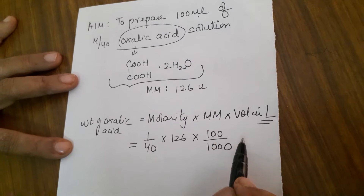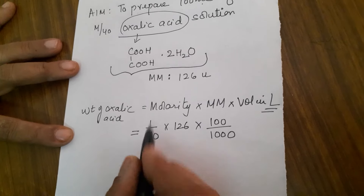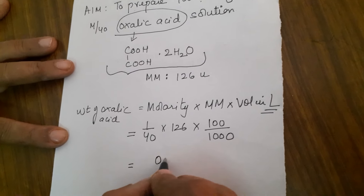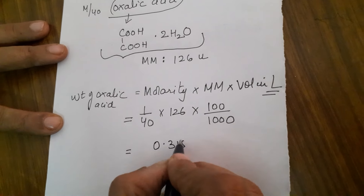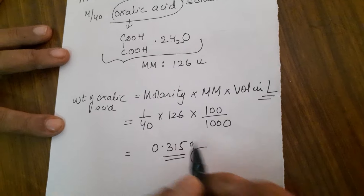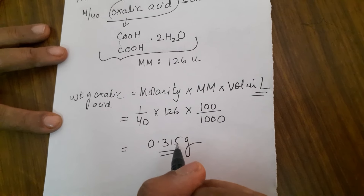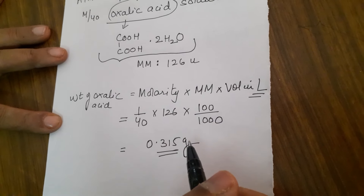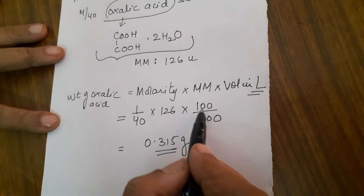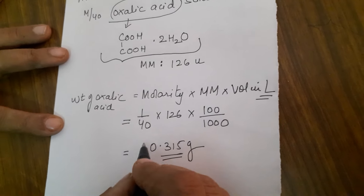If you multiply by 2.5, this value also gives you 250 ml — so the same formula works for a 250 ml flask as well.